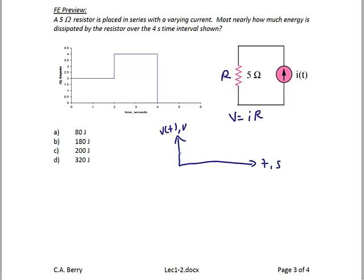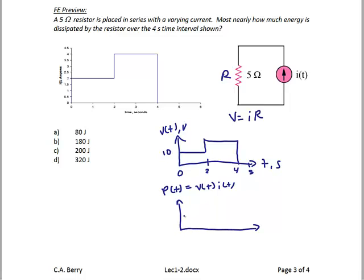If the current is 2 amps, 2 times 5 is 10 volts, so the curve starts at 10. At 2 seconds it jumps up to 5 times 4, which is 20 volts, and then drops back to 0 at 4 seconds. If we want to find the power waveform, we multiply voltage and current together. Making a rough sketch, the power jumps up at time equals 2 seconds and drops back down at 4. So 10 times 2 is 20 watts, and 20 times 4 is 80 watts.